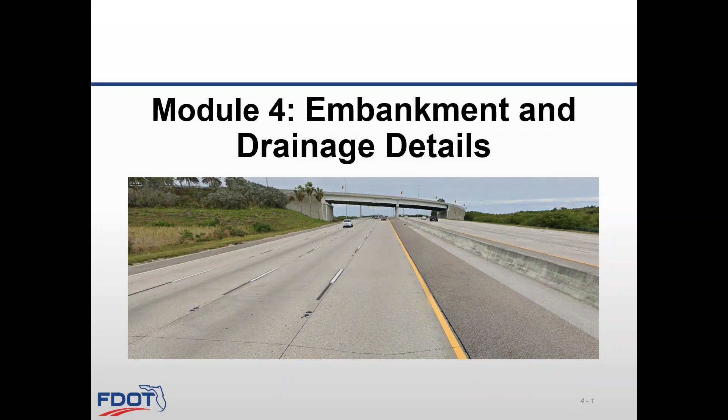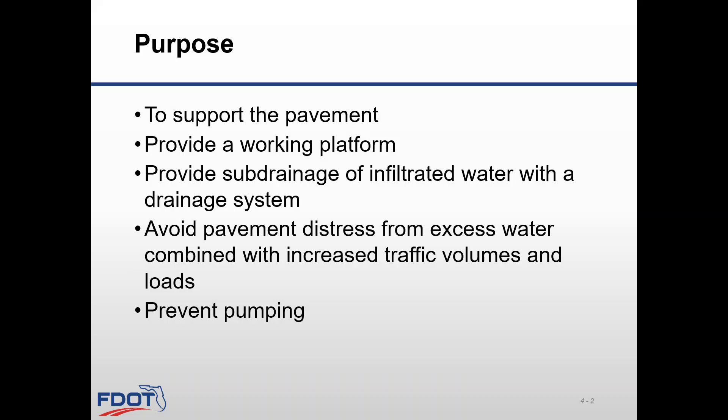Module 4 will discuss the embankment and drainage details considerations when designing a rigid pavement. The purpose of the embankment and sub-drainage system for a rigid pavement design is to provide uniform, stable, and permanent support to the pavement, provide a working platform for construction equipment, and provide sub-drainage of infiltrated water with a drainage system.